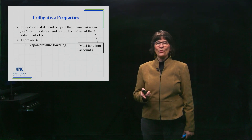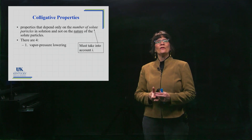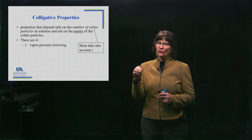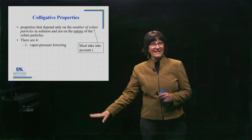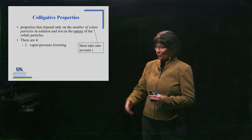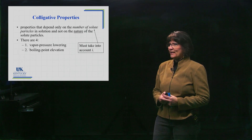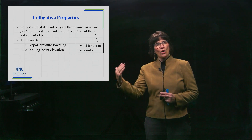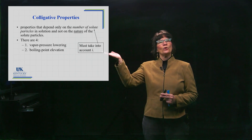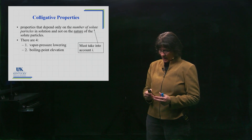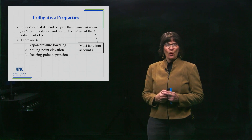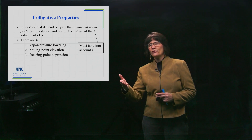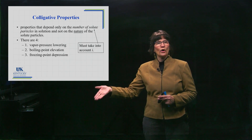The first one is vapor pressure lowering. When you hear that word 'lowering,' it means that as you add more and more particles, the vapor pressure is going to go down. The second one is boiling point elevation — as you add more and more particles, the boiling point will go up. The third one is freezing point depression — as you add more and more solute particles, the freezing point will go down.